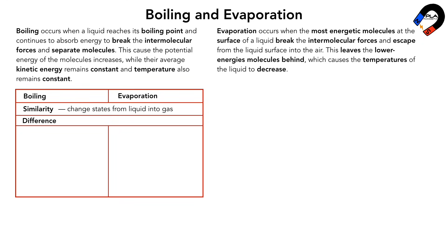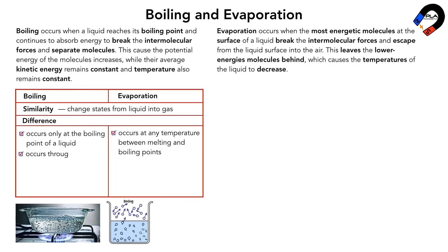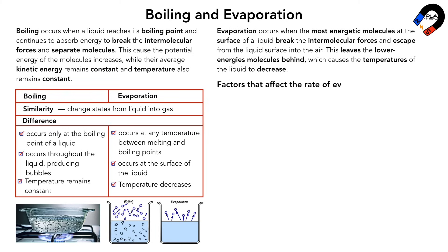The differences between boiling and evaporation: boiling occurs only at the boiling point of a liquid, while evaporation occurs at any temperature between the melting and boiling points. Boiling occurs throughout the liquid producing bubbles, while evaporation occurs only at the surface of the liquid. Temperature remains constant during boiling, while temperature decreases during evaporation.